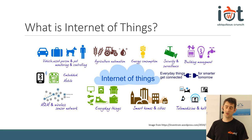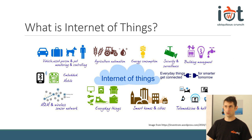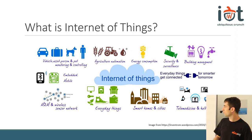These are the fields where the Internet of Things can be applied — any field, from agriculture to transportation to health sciences, and so on. This is a very good picture of what this applies to.